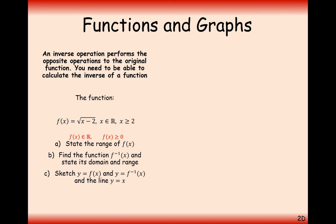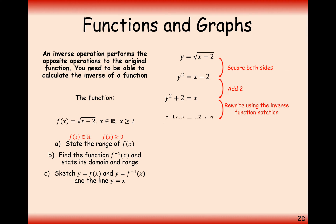For part b, find the function f inverse and state its domain and range. We set up y equals our function and rearrange — squaring both sides and adding 2 gives y squared plus 2 equals x. This inverse function shows how we get from our y output numbers back to our x input numbers. We write the final answer as f inverse of x equals x squared plus 2.